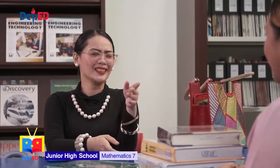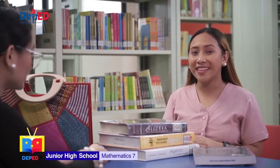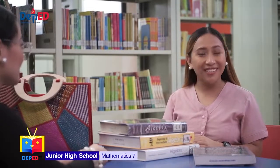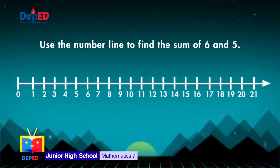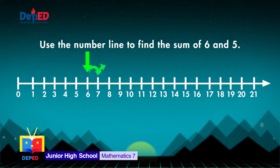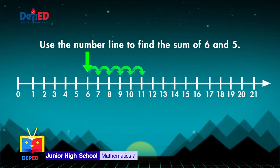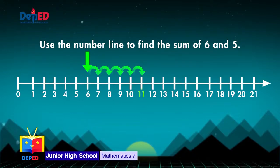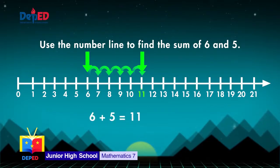There are also different ways in adding integers. First is by using a number line. Let's try it! Use the number line to find the sum of 6 and 5. On the number line, start with 0, count 6 and then count 5 units to the right since 5 is positive: 1, 2, 3, 4, and 5. It stopped at 11. Hence, 6 plus 5 is equal to 11.